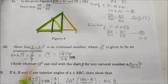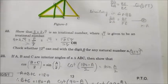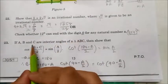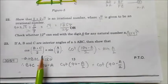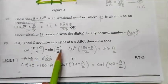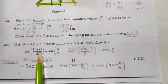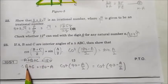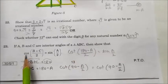Question number 23: If A, B, and C are interior angles of a triangle, then A + B + C = 180° by the angle sum property. Show that cos((B + C)/2) is equal to sin(A/2). We transfer A to the other side to get B + C = 180° − A.